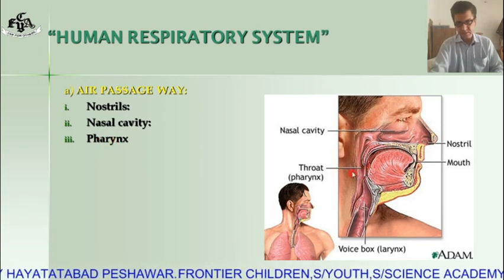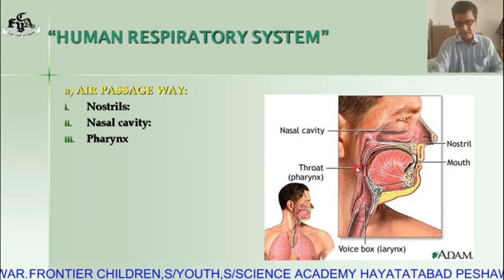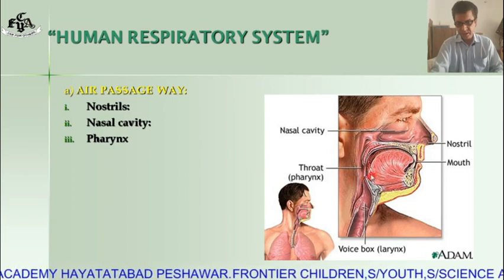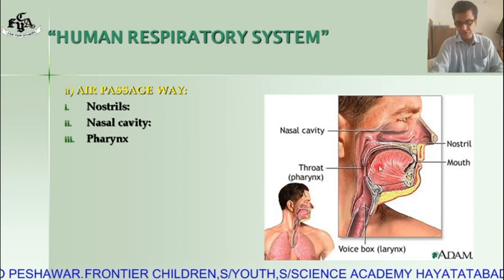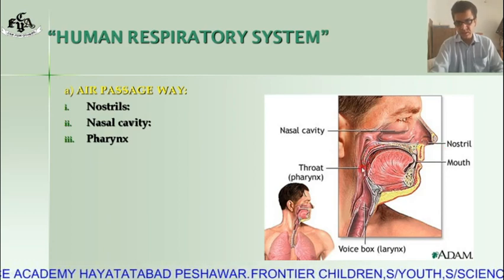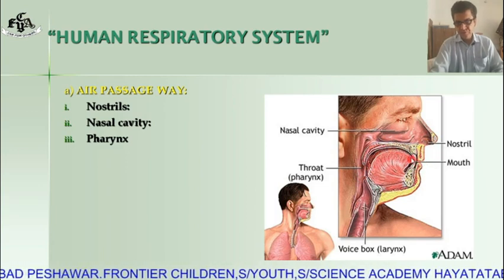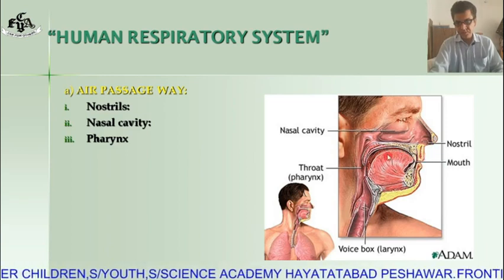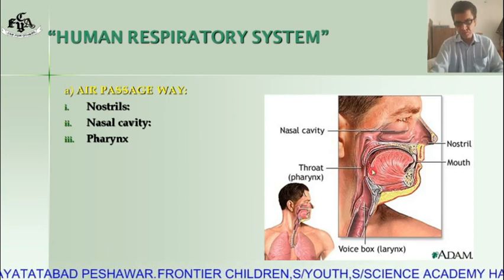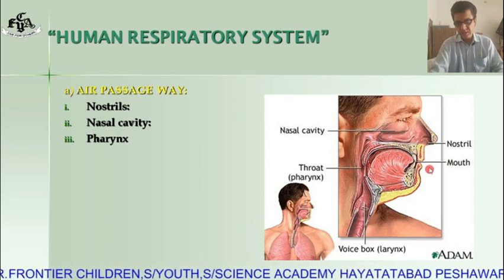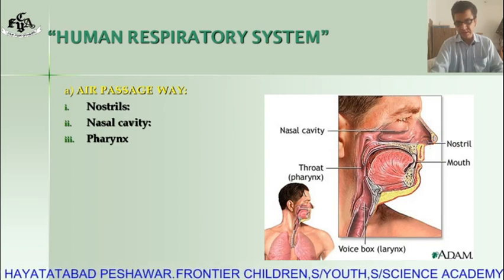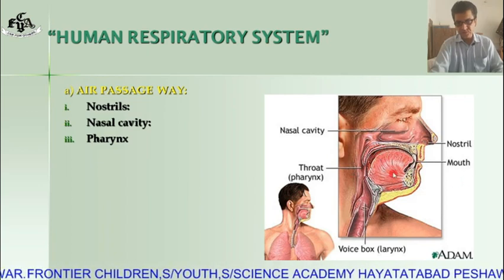The next part of the air passage is the pharynx, which is the third part. The pharynx is also called the throat, and it is a muscular passage lined with a mucous membrane. This passage is common both for the digestive system as well as the respiratory system. Air enters through the nostrils and nasal cavity and comes to the pharynx; food enters through the mouth and the tongue pushes it backward, so it also passes through the pharynx. It is better to inhale air through the nostril because germs and dust particles are filtered there.